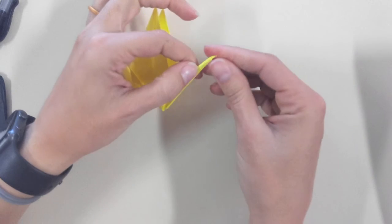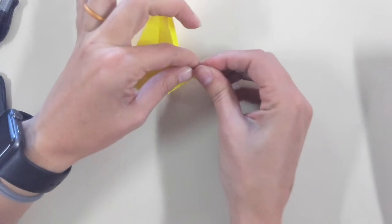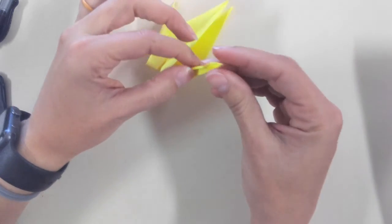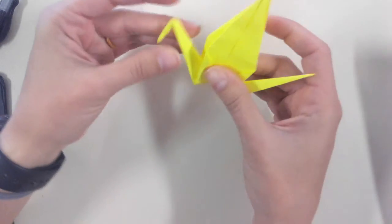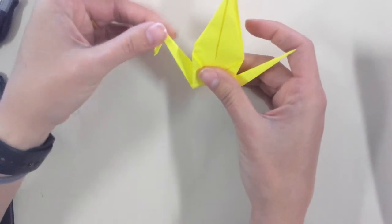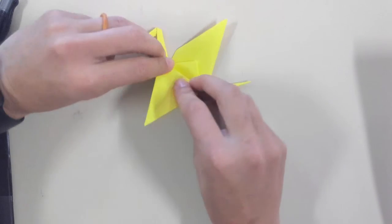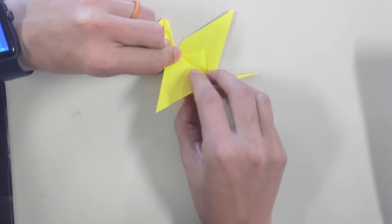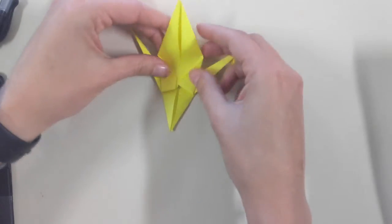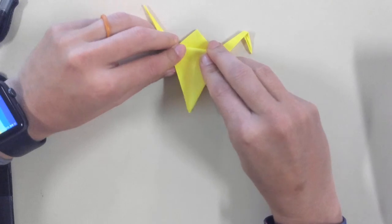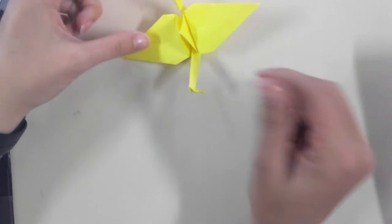Then to do the head on one side again, fold down, create a line and then fold in on itself there. And then the wings, fold down and fold down again. And then there you go, that is your crane.